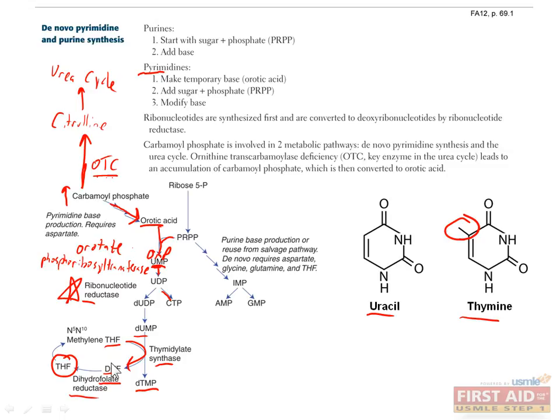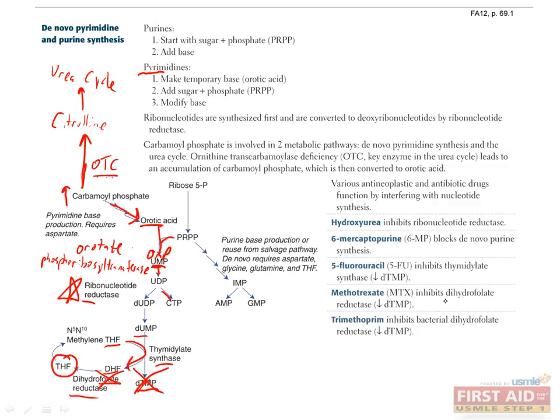Since folate is a key part of tetrahydrofolate, patients who have a deficiency in folate have defects in nucleotide synthesis, which in adults can cause anemia and can also cause neural tube defects in developing fetuses. Dihydrofolate reductase is also targeted by some cancer therapies, such as methotrexate, since cancer cells need to make nucleotides to divide, and also by trimethoprim, which specifically targets a bacterial version of the enzyme to prevent cell division in bacteria.